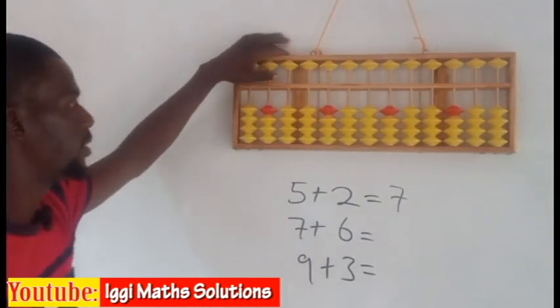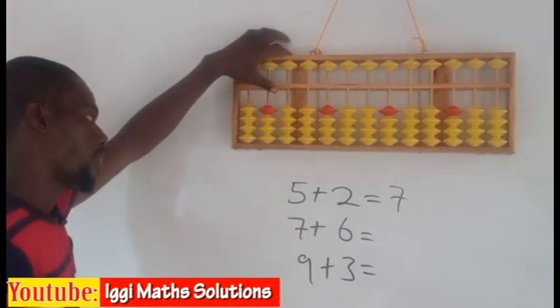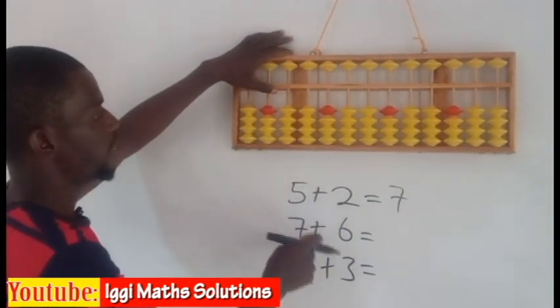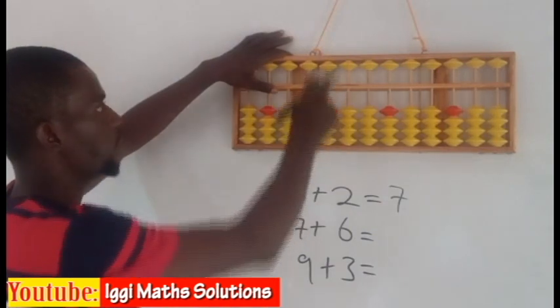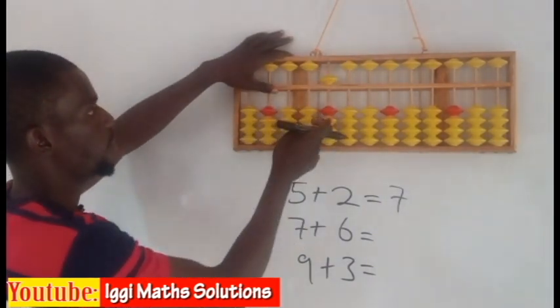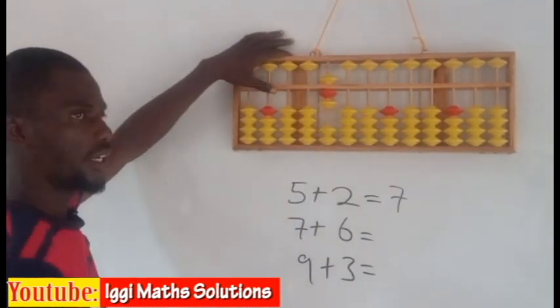Let us solve the second problem, which is 7 plus 6. So I have to represent 7 on the abacus. This is my unit rod, so I have 5 here plus 2, which is 7.